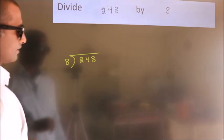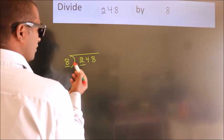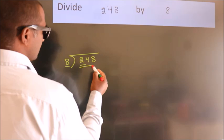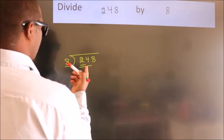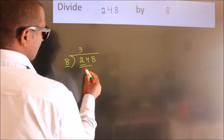Next, here we have 2, here 8. 2 is smaller than 8, so we should take 2 numbers: 24. When do we get 24? In the 8 table, 8 threes is 24.